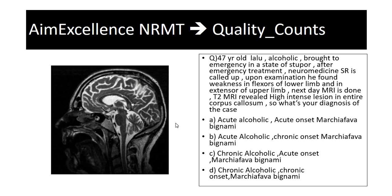Type A generally presents with acute onset Marchiafava-Bignami disease, with demyelination of the corpus callosum and splenium, and it carries a much poorer prognosis. Here we find weakness in the flexors of the lower limb and extensors of the upper limb, which points towards pyramidal tract involvement.